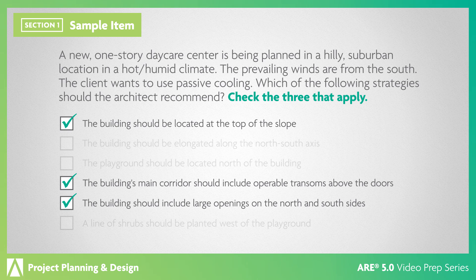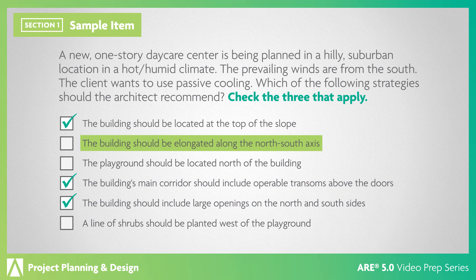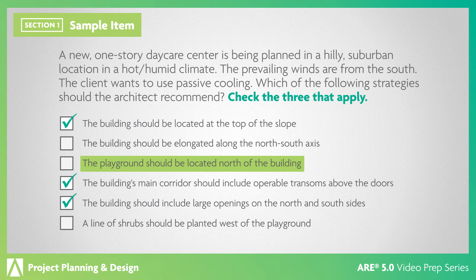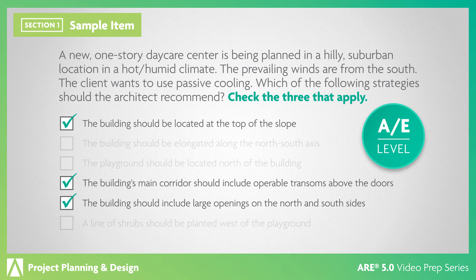These are the correct answers. Buildings in a hot, humid climate should be located at the top of a slope to catch cooling breezes. Large openings on the north and south sides and operable transoms in the corridor will allow for cross ventilation. A north-south axis would actually limit the opportunities for cross ventilation and expose the building to the hot afternoon sun. Placing the playground north of the building would provide limited shading but would block cooling breezes from reaching the playground. Planting shrubs west of the playground may provide visual interest but would not be effective in blocking the hot afternoon sun. This is an AE-level item requiring analysis of existing site conditions and passive cooling strategies to determine what's most appropriate for the given situation.